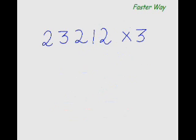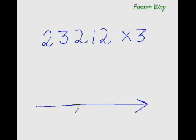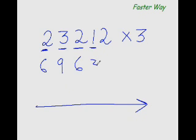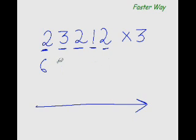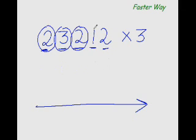The faster way is to multiply from left to right — multiply each and every digit with 3. So 2×3 is 6, 3×3 is 9, 2×3 is 6, 1×3 is 3, and 2×3 is 6. Your answer is 69,636. You don't even have to write it — the moment you see the question, you can start saying the answer.